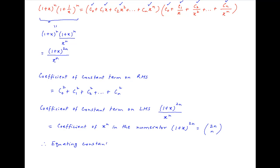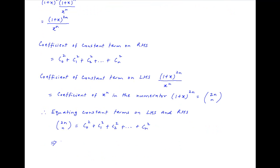Therefore, equating the constant terms on both sides, we get: C0² + C1² + C2² + ... + Cn² = (2n choose n) = (2n)! / (n! · n!), which is the required result.